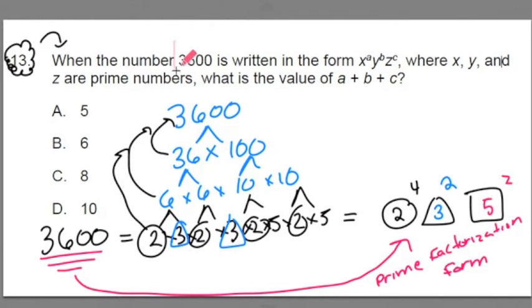So we've successfully done the first part, find the prime factorization of 3600. Now we have to do the second part, match up this algebraic expression with our answer. So let me rewrite this algebraic expression, x to the a, y to the b, z to the c.